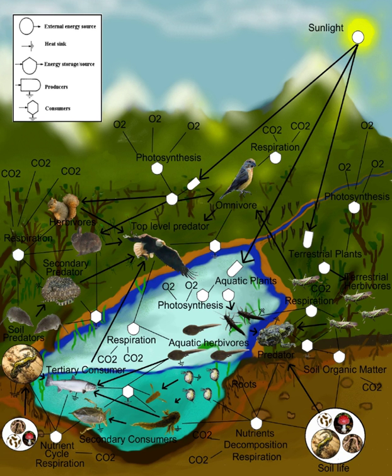Detritus can be broadly defined as any form of non-living organic matter, including different types of plant tissue such as leaf litter, dead wood, aquatic macrophytes, algae, animal tissue, dead microbes, feces, dung, fecal pellets, guano, frass, as well as products secreted, excreted or exuded from organisms such as extracellular polymers, nectar, root exudates and leachates, dissolved organic matter, extracellular matrix, and mucilage. The relative importance of these forms of detritus, in terms of origin, size and chemical composition, varies across ecosystems.